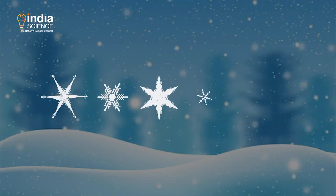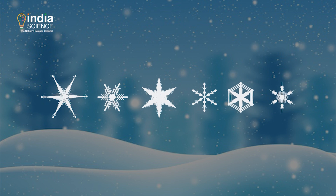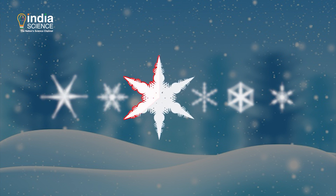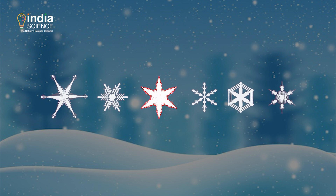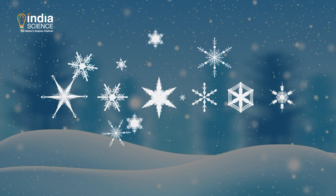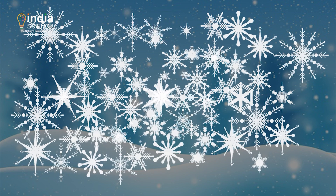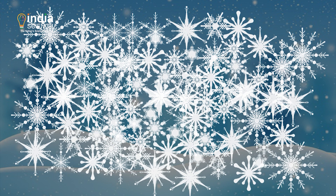So now, look at these snowflakes. Do you see any similarities or any differences in these? All of these snowflakes have six sides. But all of these have really unique shapes. Not just that, scientists believe that no two snowflakes can be the same. And there are almost 10 raised to the power 34 unique snowflakes in the world.